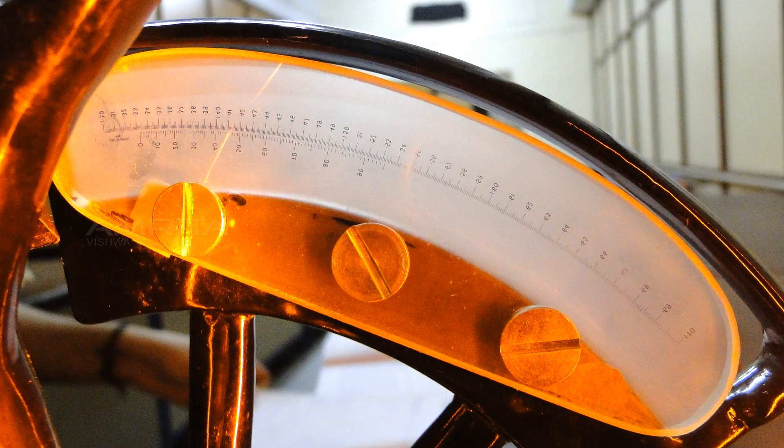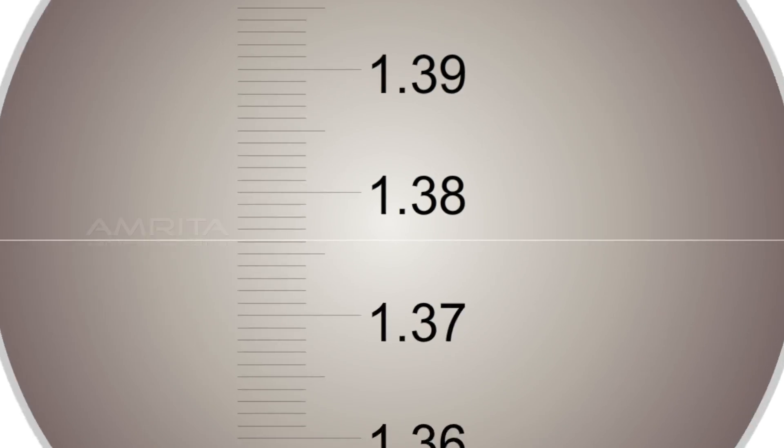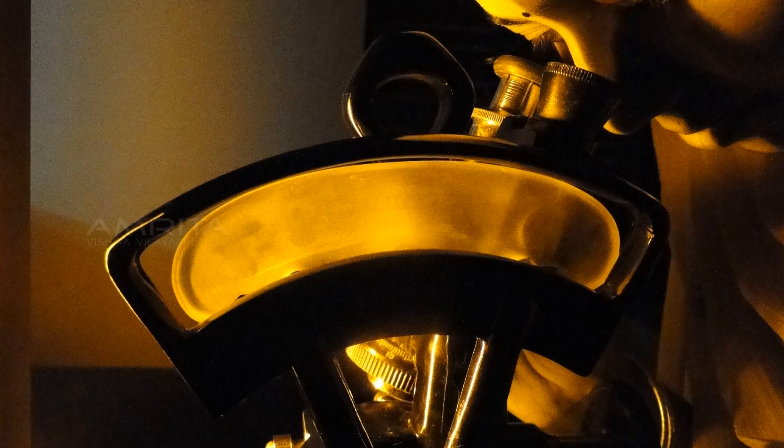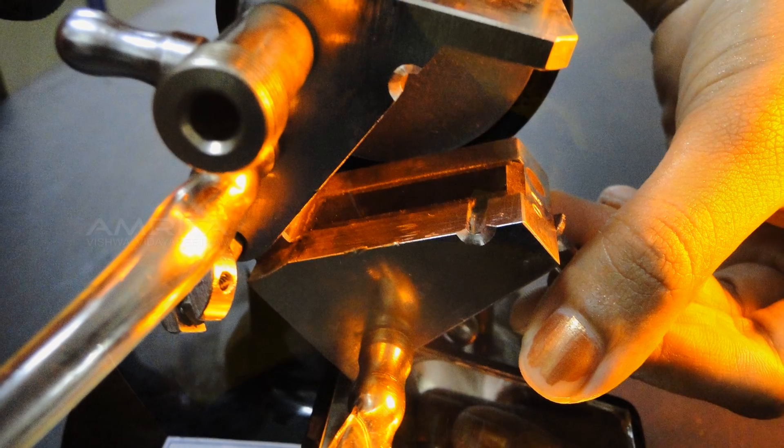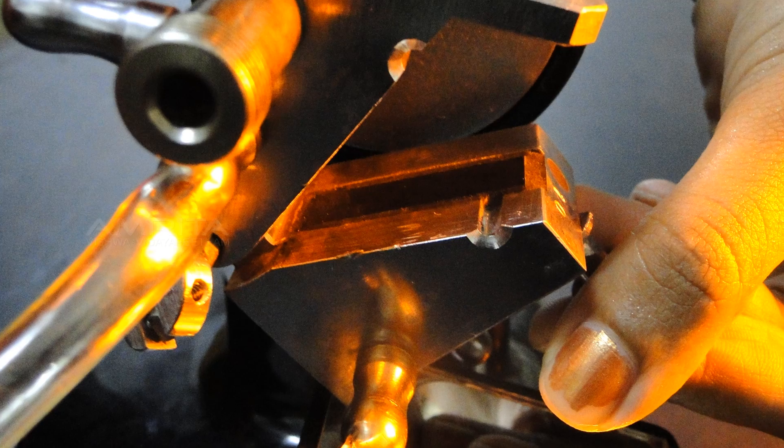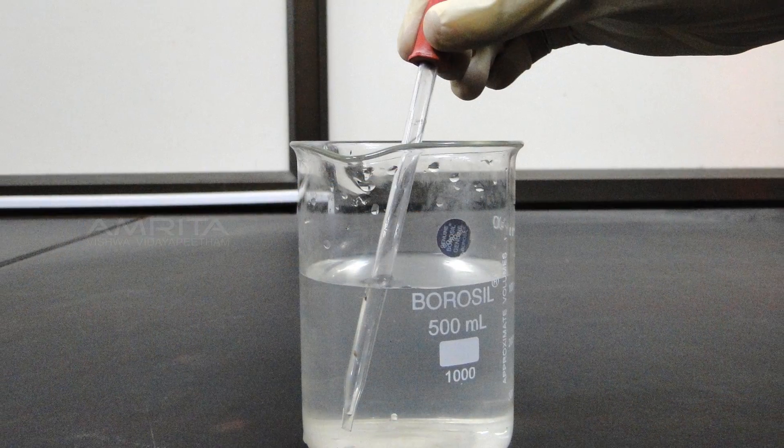Read out the integer value from the rough scale and the decimal number from the refined scale. Read the index of refraction using the telescope scale. Open the double prism and dry out glass surfaces. Repeat the experiment with different liquids.